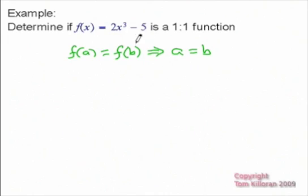All right, so basically we're just going to do this first part and see if we're guaranteed this second piece. If we are, it's a one-to-one function.